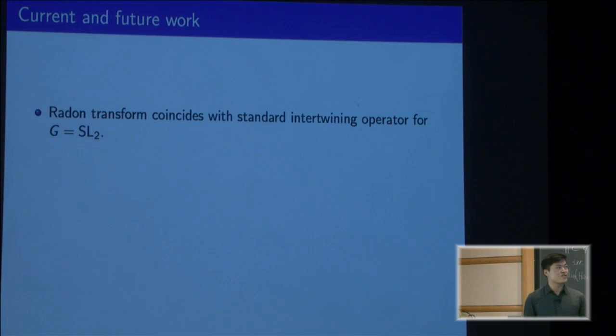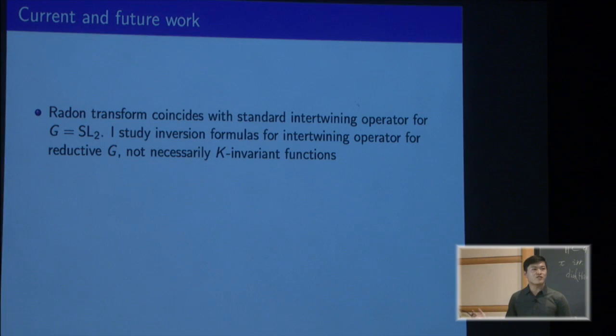Now I'll talk a little bit about how this relates to what I'm currently working on. Secretly, this Radon transform is actually the same as the intertwining operator for the group SL2. I'm really interested in the intertwining operator. More particularly, I want to study inversion formulas for the intertwining operator, not just for the K-invariant case. For that group SL2, I have some explicit formulas, but I'd like to get these formulas also for a general reductive group.